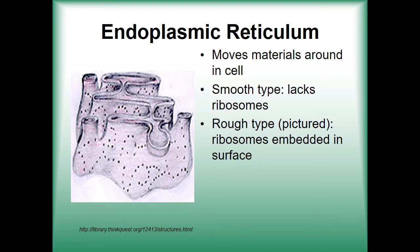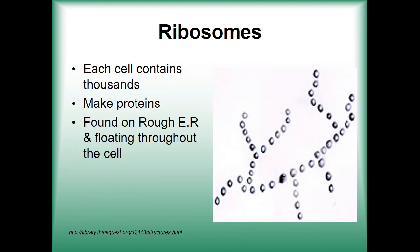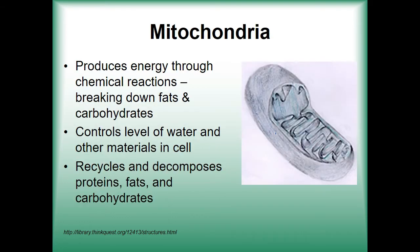Speaking of ribosomes, these small bead-like organelles have two main functions: their role in the decoding, translation, and transportation of genetic material by forming peptide bonds. Arguably the most popular part of the cell, the mitochondria is the power plant of the cell, responsible for the production of cellular energy by breaking down fats and carbohydrates.